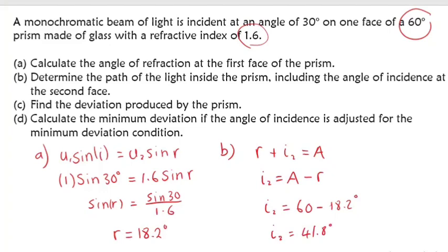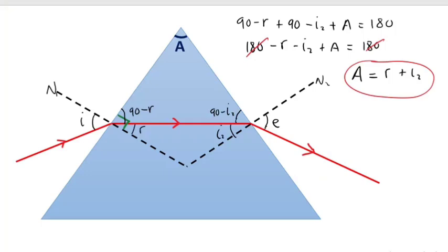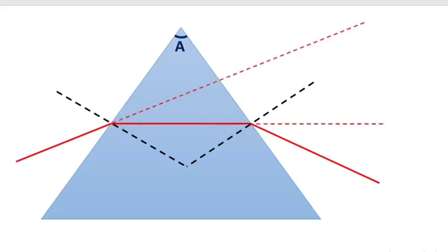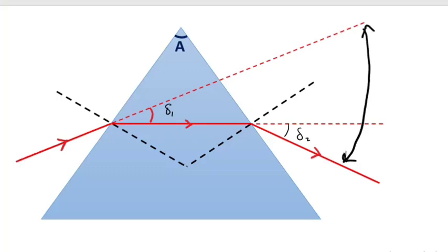Part C says find the deviation produced by the prism. To find deviation, we need to extend the incident rays. The angle found between the extended incident ray and the refracted direction is the angle of deviation. We call the first one delta 1. Similarly, we have delta 2 at the second face. The total deviation is delta 1 plus delta 2.